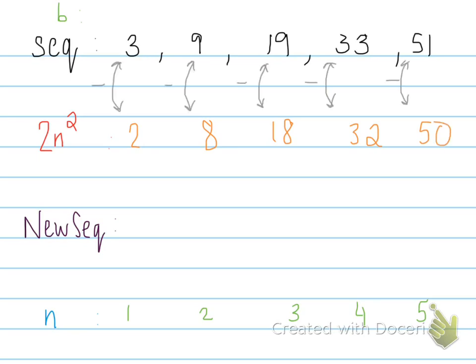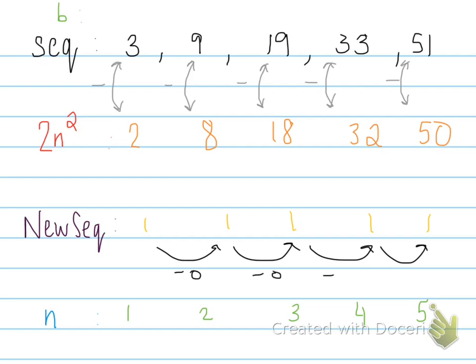We subtract the 2n² values from the initial sequence: 3 − 2, 9 − 8, 19 − 18, 33 − 32, and 51 − 50. The new sequence we get is 1, 1, 1, 1, 1. We then find the difference between these values — meaning what number plus or minus gives you the next number. Since 1 − 0 gives 1, 'b' equals 0.